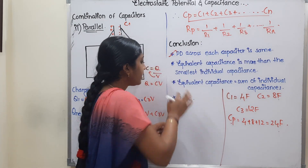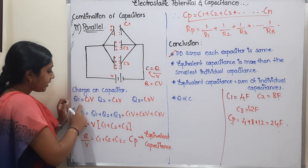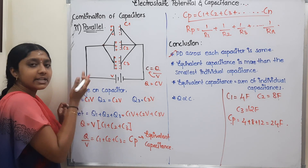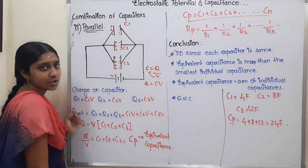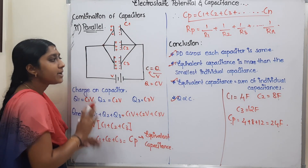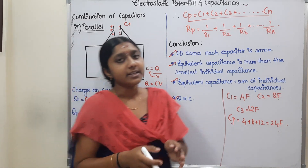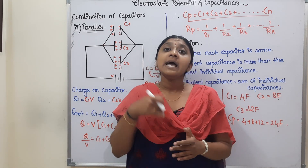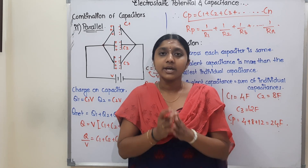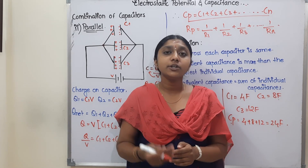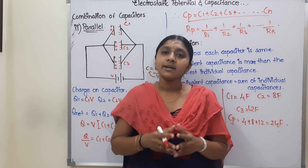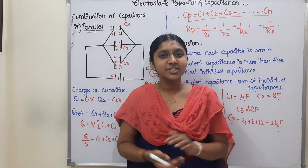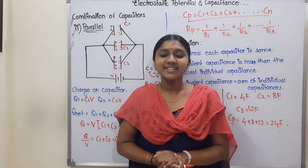Third point: equivalent capacitance Cp equals the sum of individual capacitances C1 + C2 + C3. Fourth point: Q is directly proportional to C since V is constant in parallel. The derivation is very important and straightforward. I hope this topic on electrostatic potential and capacitors is clear. Please subscribe, click like, share with friends, and stay tuned. Bye!